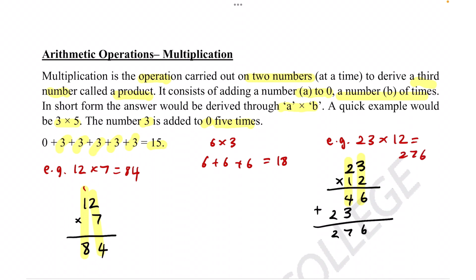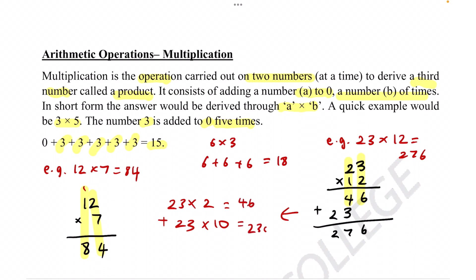Why it works is that we're essentially splitting the numbers — so we're basically going 23 times 2 plus 23 times 10. As you can see, we got 46 and then 230, and then we added them together to finally get 276. That's how you do multiplications. Let's move on to some more difficult questions.